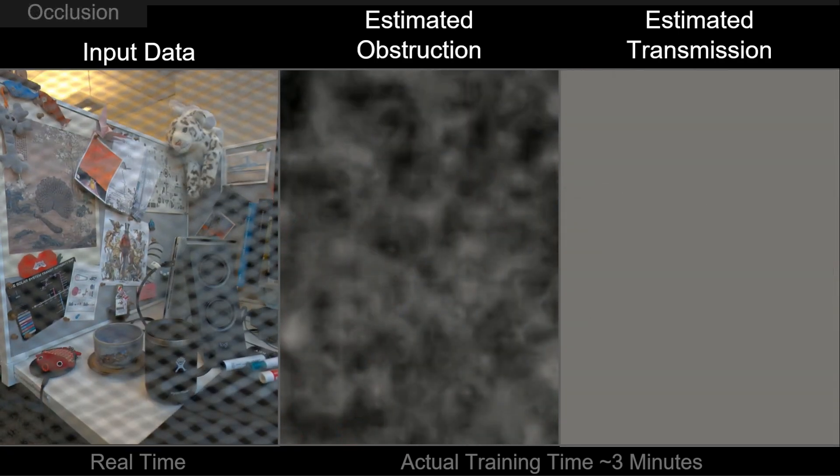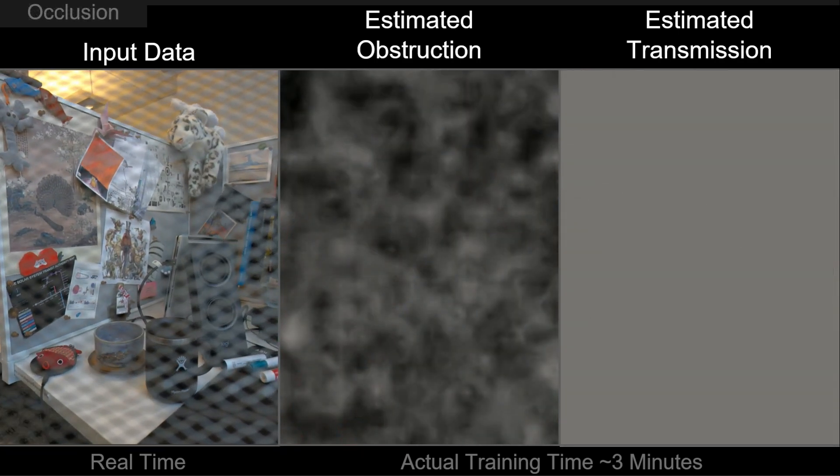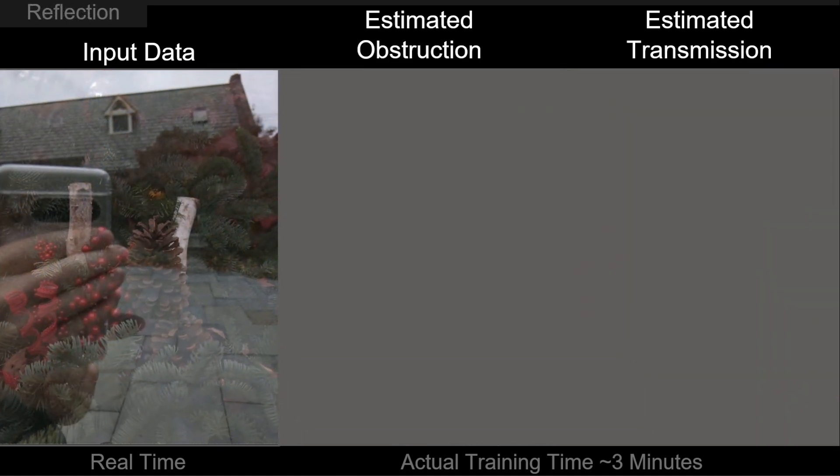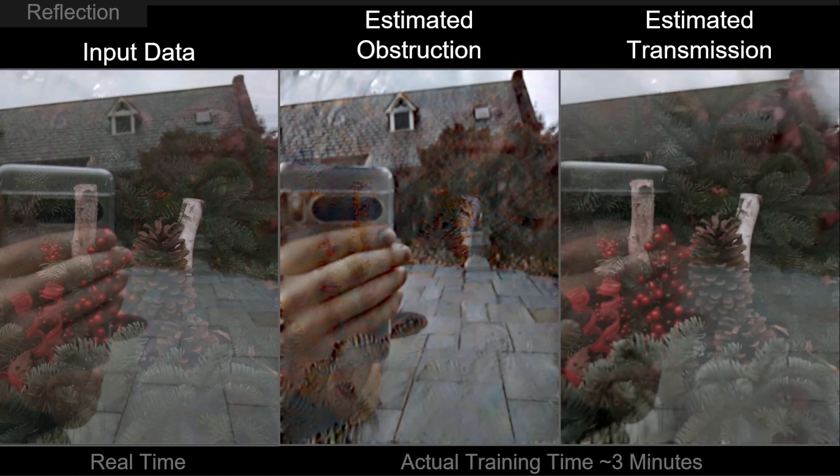Out-of-focus occluders pose no problem for our soft alpha-composited model. And for minuscule motion, we can even reconstruct objects hidden in the reflection behind the photographer.